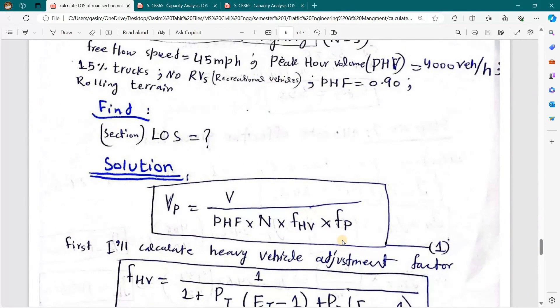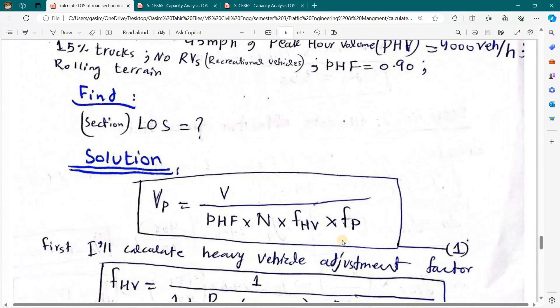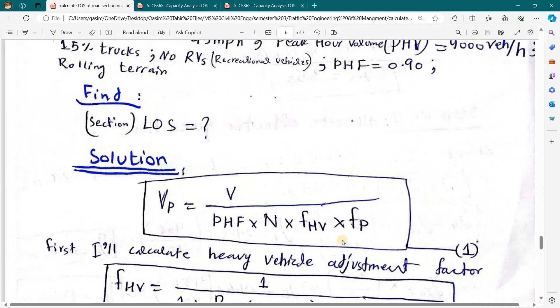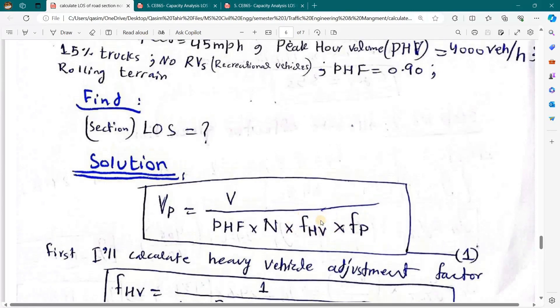of the driver. If our driver knows the area where he is driving, it will be 1. Otherwise, if the driver is unfamiliar with the area, then this factor will be less than 1. So we will use it as 1. Now fHV is the heavy vehicle adjustment factor. We have a separate formula to calculate that.